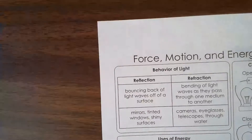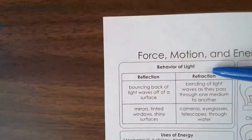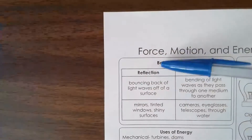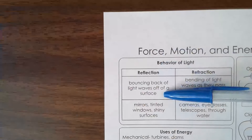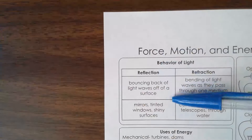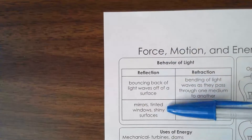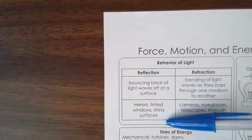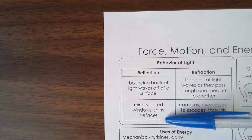Force, motion, and energy. Let's talk about the behavior of light. Reflection is the bouncing back of light waves off a surface, such as mirrors, tinted windows, and shiny surfaces. Anything you think you can see your face in — that's reflection.